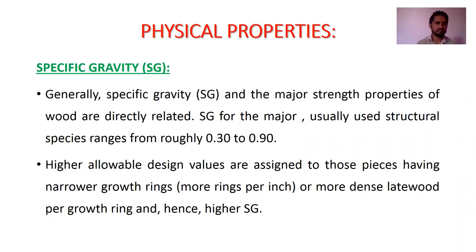Next, we have physical properties. First is specific gravity. Generally, specific gravity and the major strength properties of wood are directly related. Specific gravity for the major usually-used structural species ranges from roughly 0.3 to 0.9. If the specific gravity is good for a particular material, the other properties such as strength will also be good. Higher allowable design values are assigned to pieces having narrow growth rings, more rings per inch, and hence higher specific gravity.